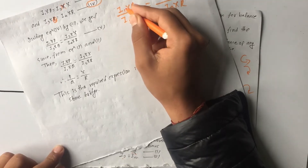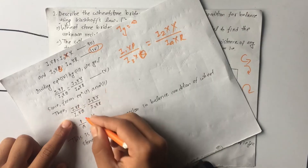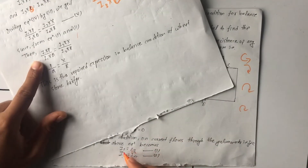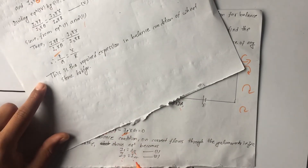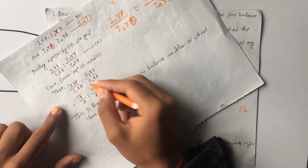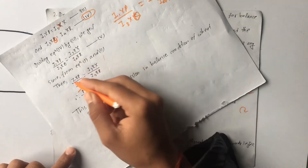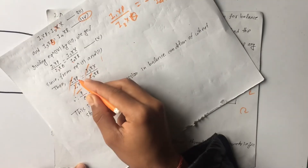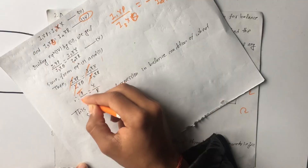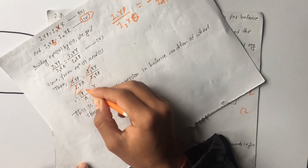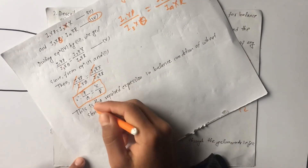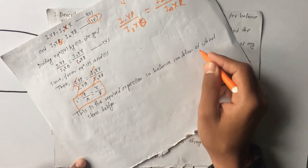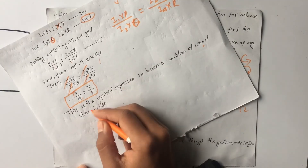Since I1 equals I3 and I2 equals I4, dividing the equations gives us P by Q is equal to X by R. This is the required expression for the balance condition of the Wheatstone Bridge. Thank you for watching!